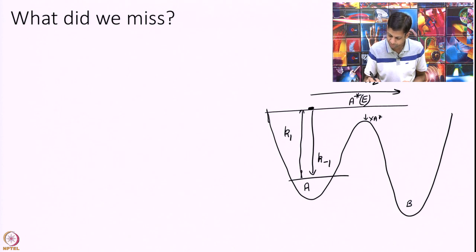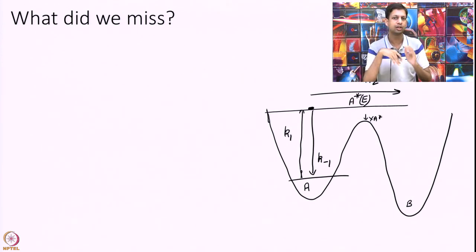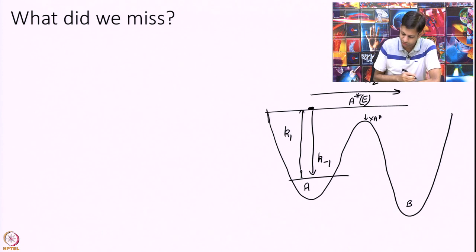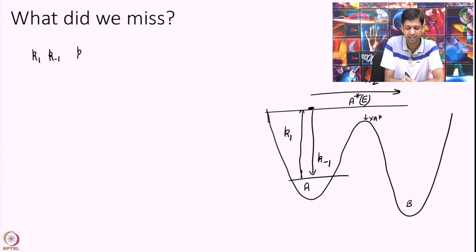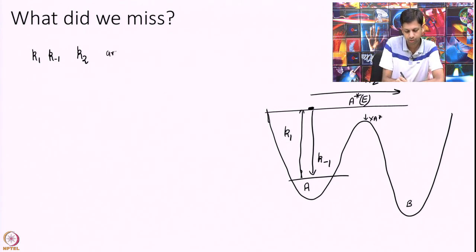K1 pumps me up to the excited state. K2 will drive me to the product side. And K minus 1 depletes my population in state energy E. The subtle point is the following. We have been taking these K1, K minus 1, and K2 independently. We are thinking of them as 3 independent numbers as a function of temperature. They are not independent. That is the point, they are correlated.